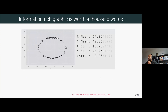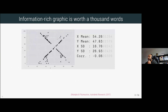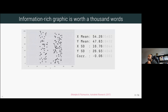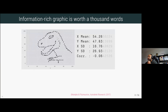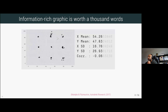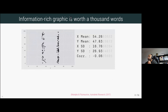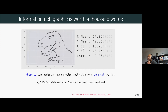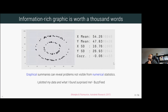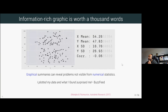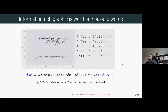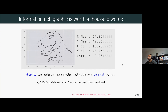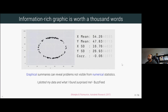For example, looking at a simulated dataset which has the same mean on x and y, same standard deviation, and same correlation — but the underlying distribution of the data looks quite different. Graphical summaries can reveal problems that are usually not visible just by looking at numerical statistics. It's really important that you visualize the data and not just rely on numerical statistics.